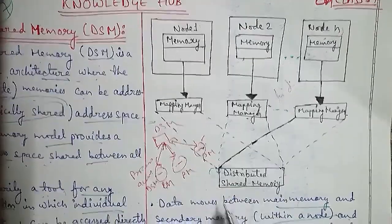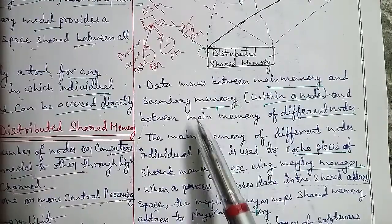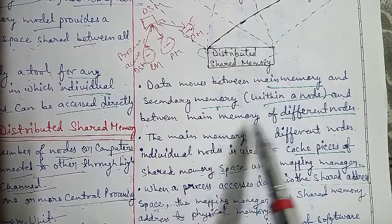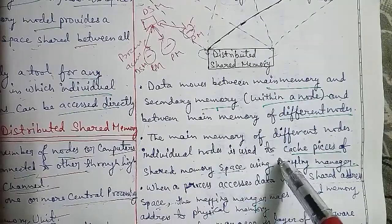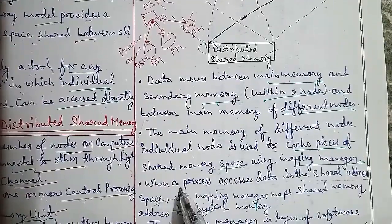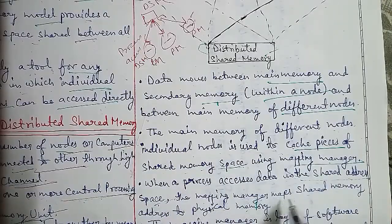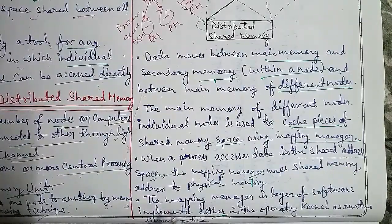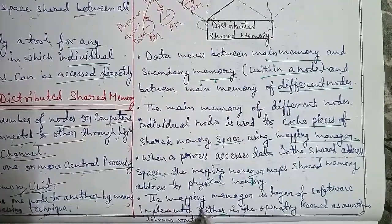Data moves between main memory and secondary memory within a node, and between the main memories of different nodes. Individual nodes use cache and the shared memory space. Using the mapping manager, when a process accesses data in the shared address space, the mapping manager maps the shared memory address to physical memory. The mapping manager is implemented in software as operating system kernels and runtime routines.